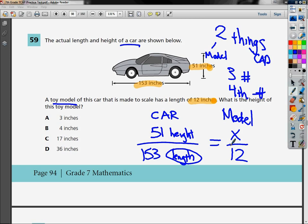So I'll do 51 times 12 equals 153 times x. So 51 times 12 is 612.